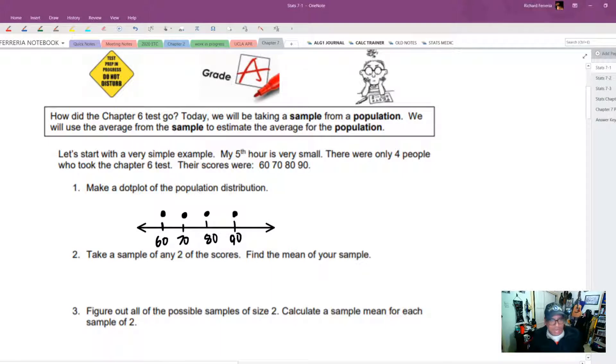That's none too difficult. Just 60, 70, 80, 90, a dot above each. And then it says take a sample of any two scores and find the mean of those two scores. So in anticipation of what's coming, I'm just going to use the first two. So the first sample is going to be 60 and 70, and that mean x bar equals 65.